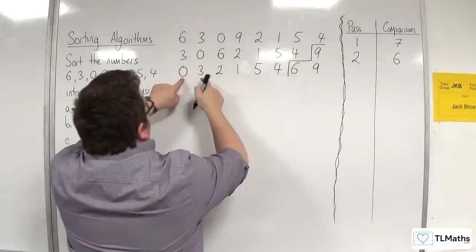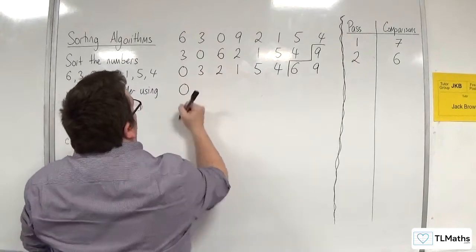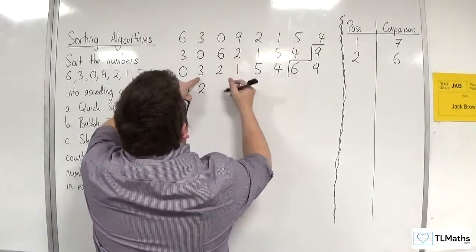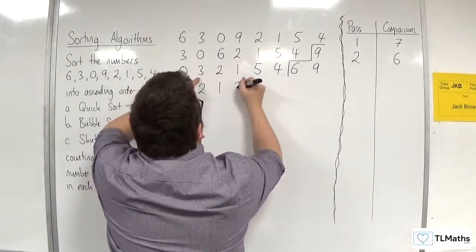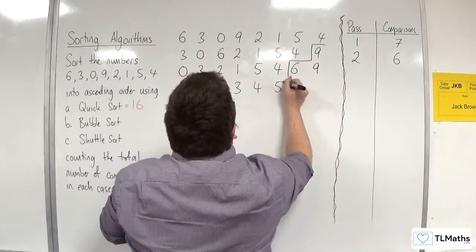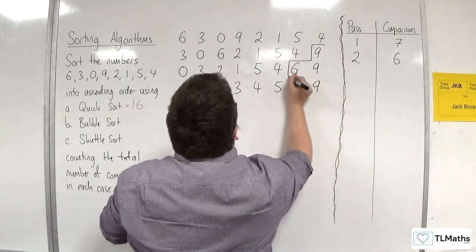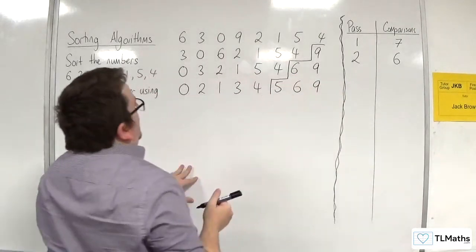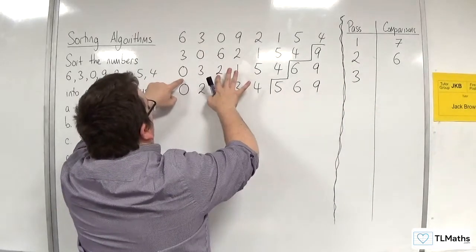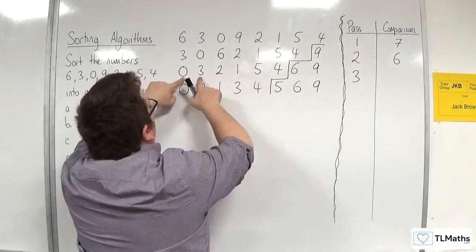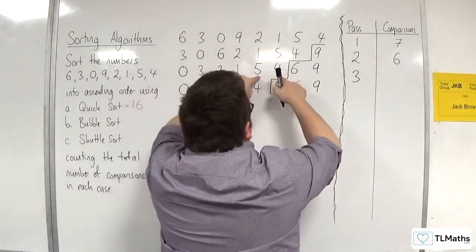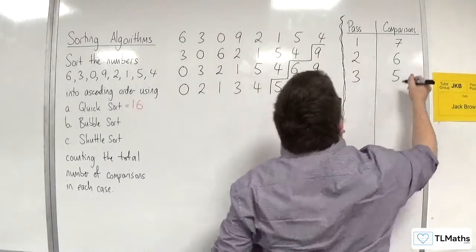Then we're comparing 0 and 3 — 0 is smaller than 3. Then 3 and 2, then 3 and 1, then 3 and 5, then 5 and 4 — 5 bubbles to the top. In that third pass, we made 5 comparisons.